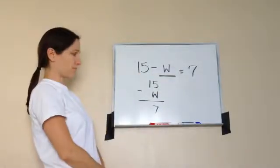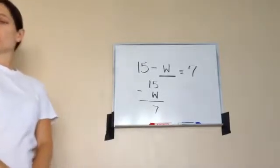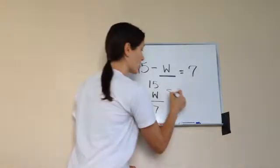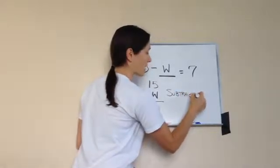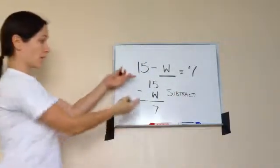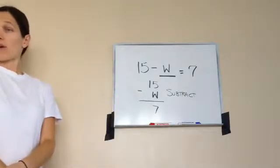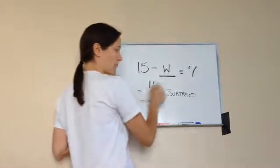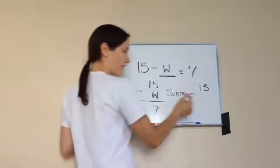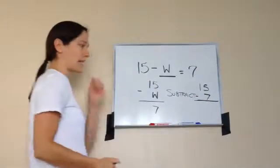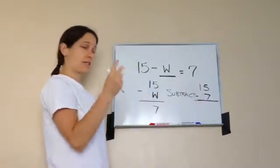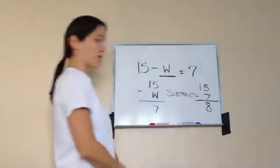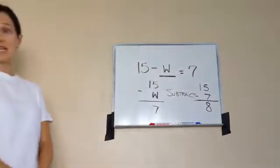Do you know what to do when you have a missing addend? You're going to always subtract. What do you subtract? The numbers you do have. Whenever you're working with subtraction, you always have to subtract from the biggest number. So we're going to take our biggest number, 15, and subtract the other number we have: minus 7. What is the answer? Let's count up to 15 — 8, 9, 10, 11, 12, 13, 14, 15 — I get 8.